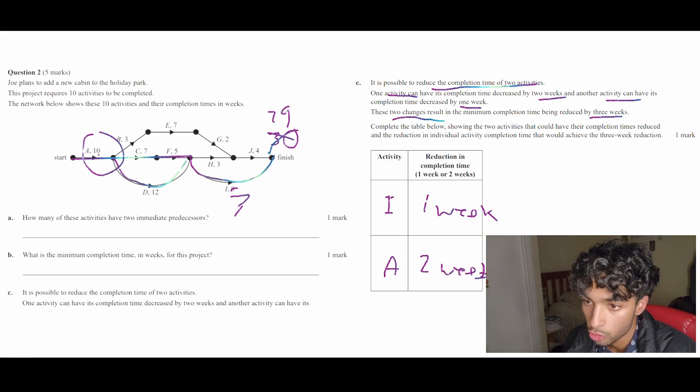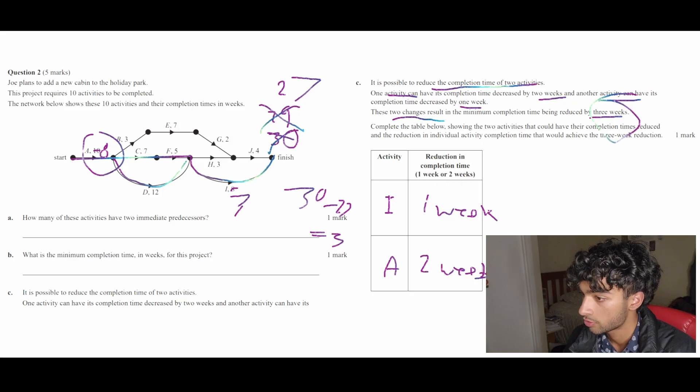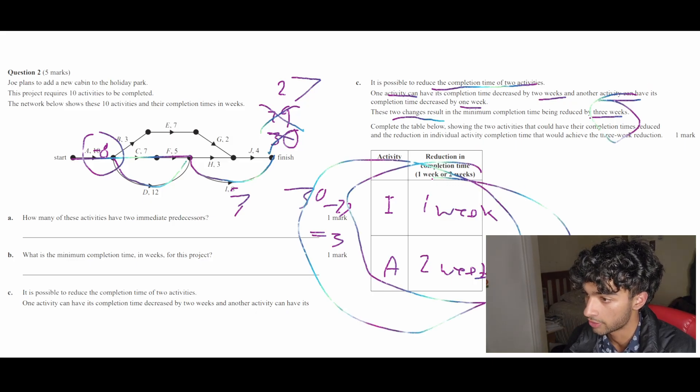And if that's two weeks, that means A10 becomes A8. And therefore, the overall completion time is now 27. So 30 minus 27 is indeed three weeks. So this is our final answer.